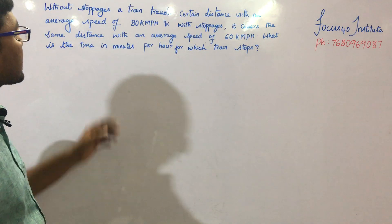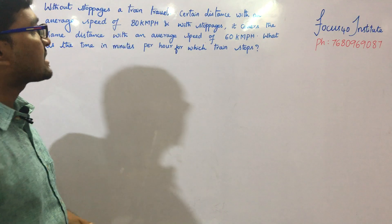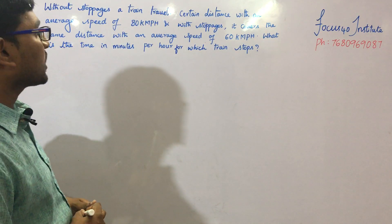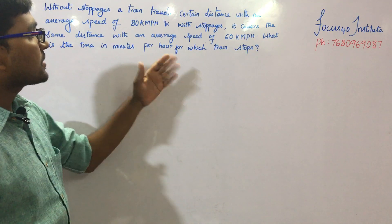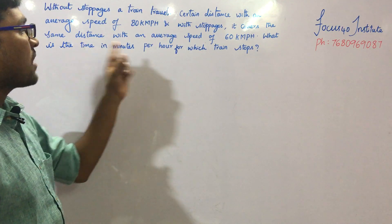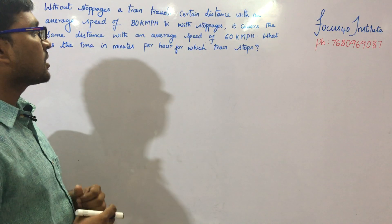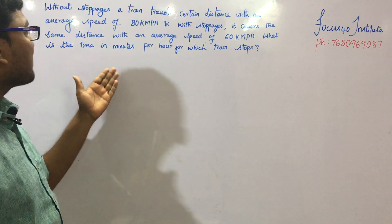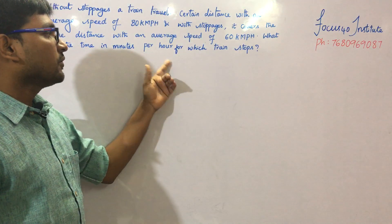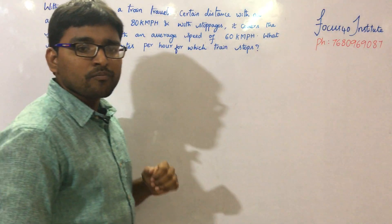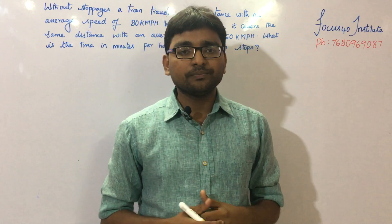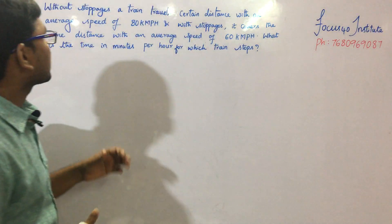Without stoppages, a train travels a certain distance with an average speed of 80 km per hour. With stoppages, it covers the same distance with an average speed of 60 km per hour. What is the time in minutes per hour for which the train stops?